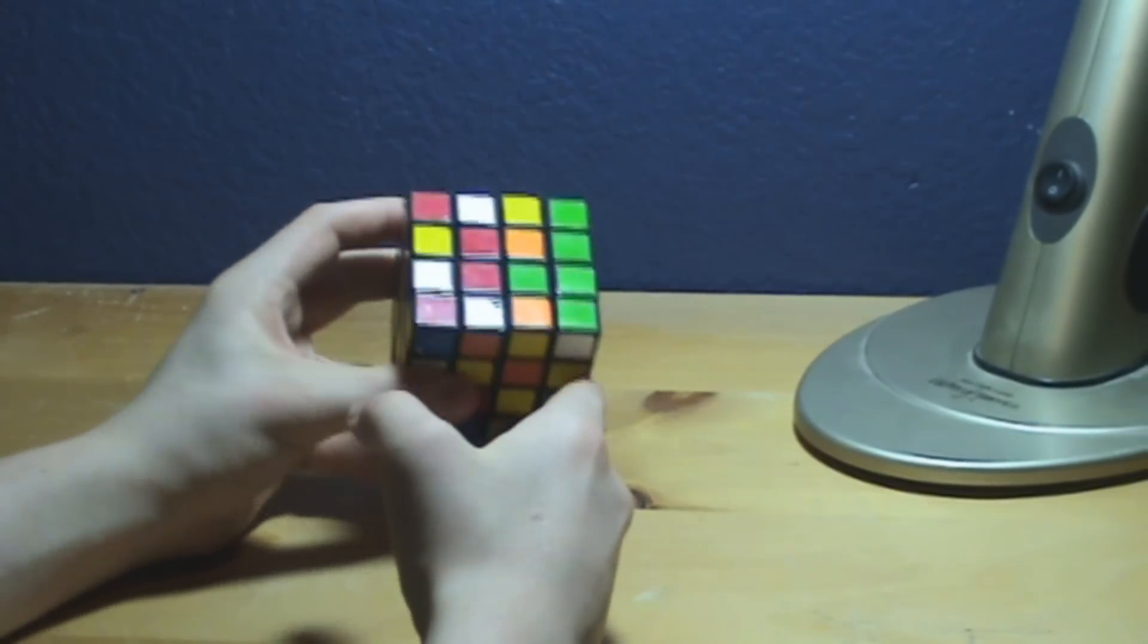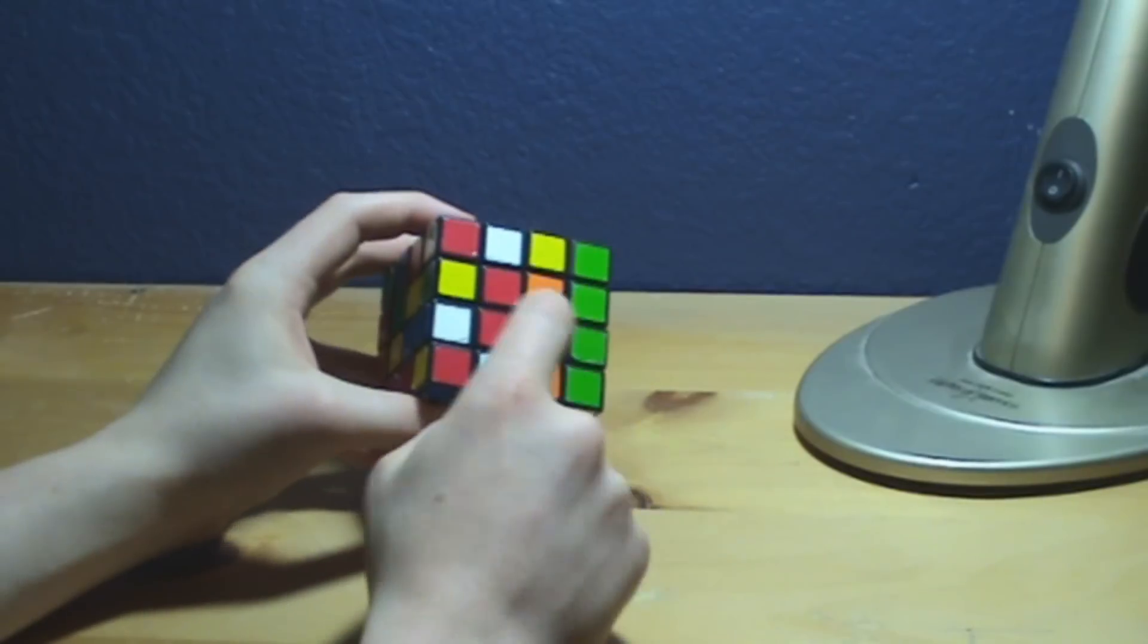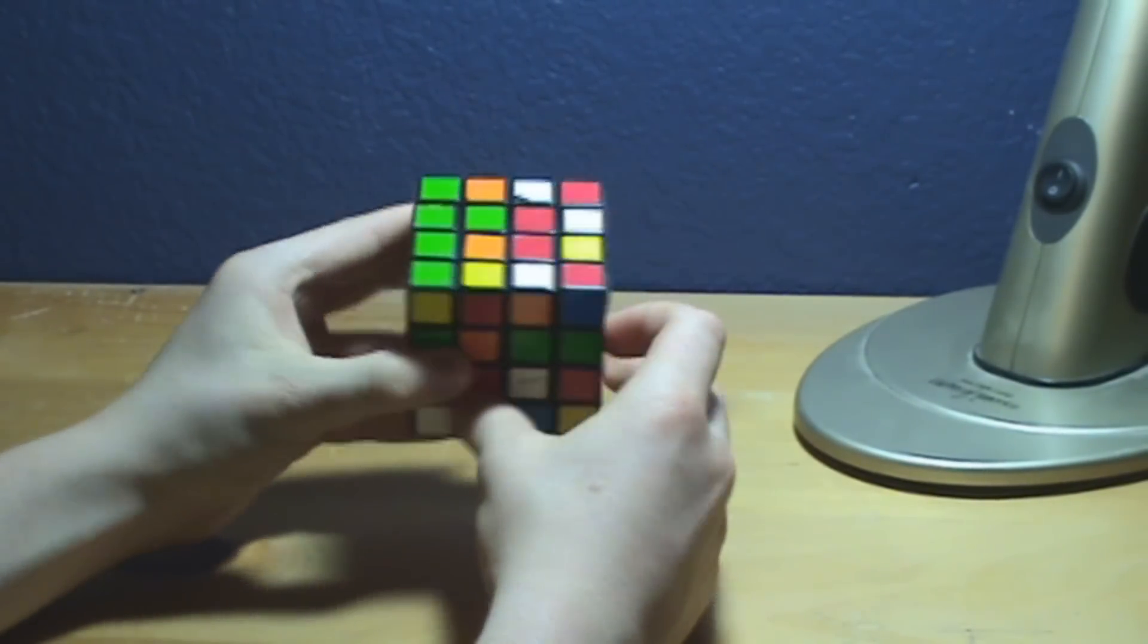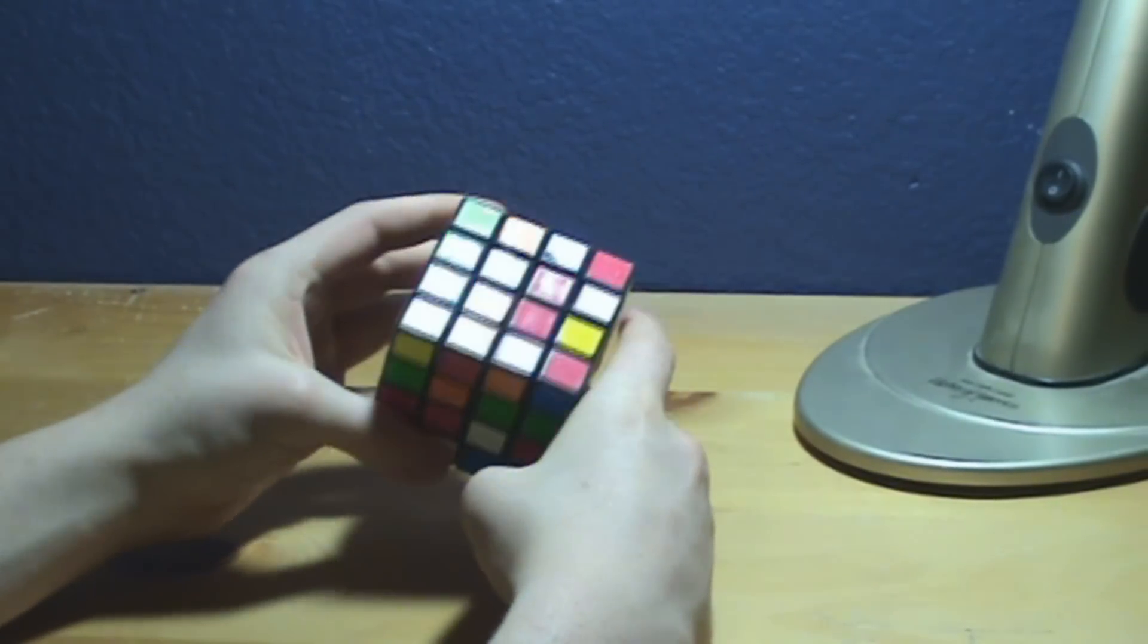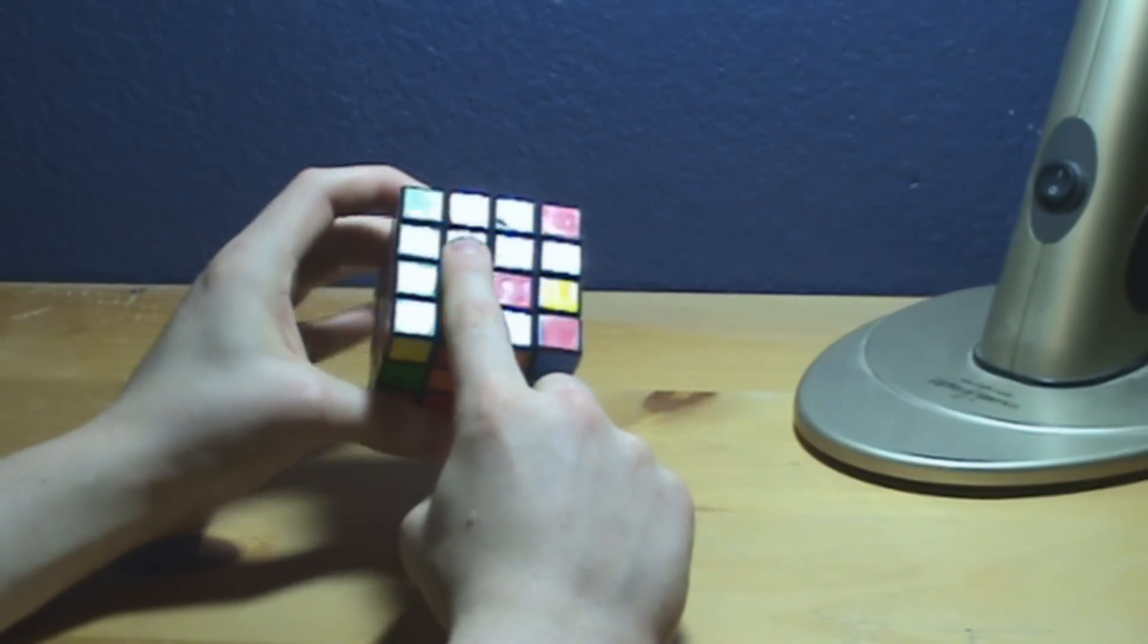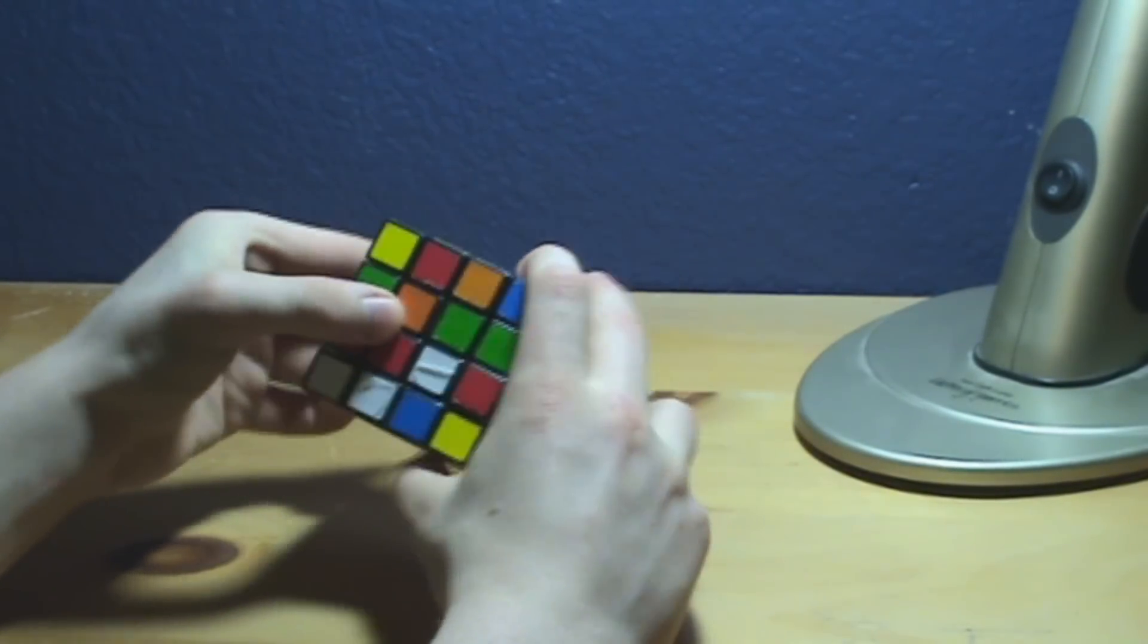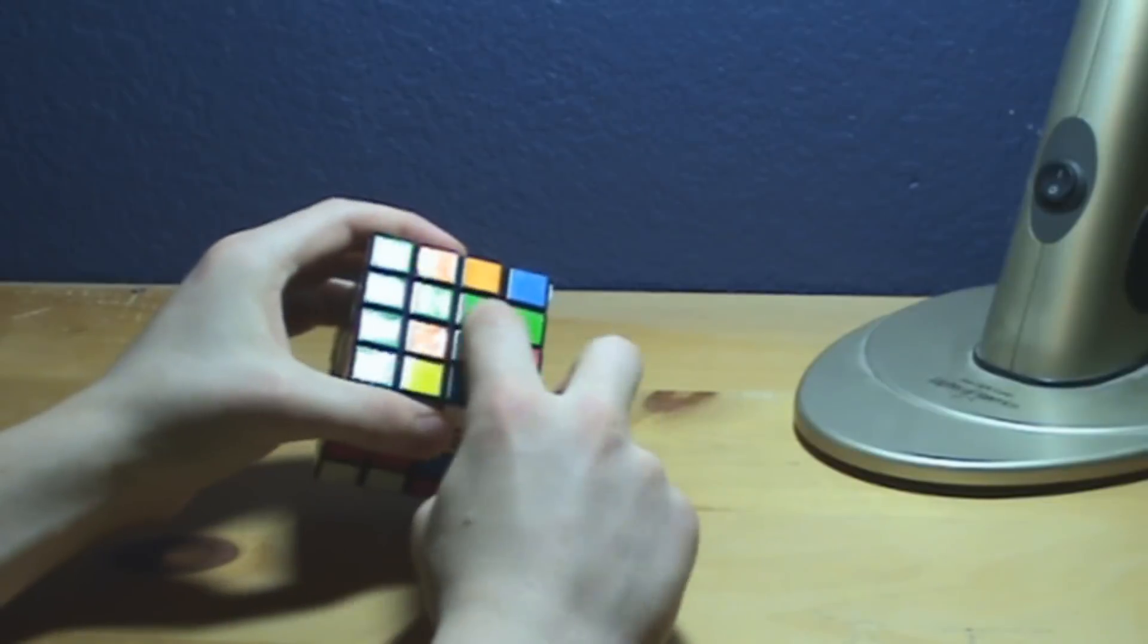Now I will show you how to solve the centers now that I have it mixed up. So, the first thing we need to do is very easy. All we're going to do is get a green center or a center color of your choice. For this tutorial, I will use the green side. The easiest way to do it is find a green piece, and then we'll find another green piece. We'll use this one. If we just turn it up, we make this little green bar here.